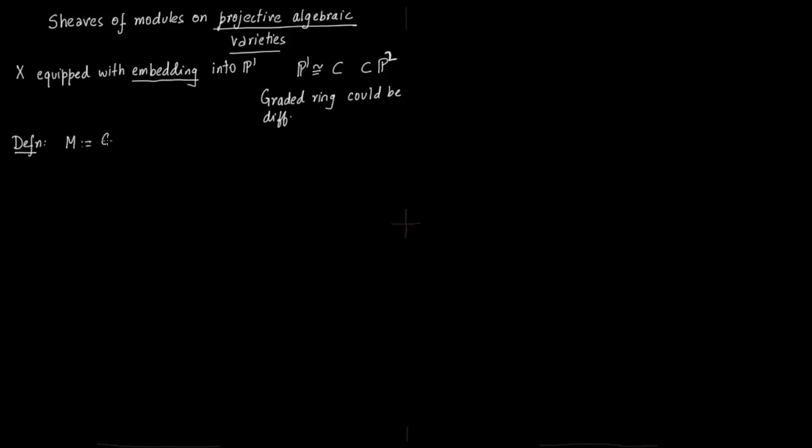Again, we will follow the case of sheaves of modules on affine algebraic varieties. But here the ring is graded and the module is also graded. Say M is a graded R-module, and M tilde is an O_X module.